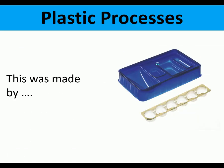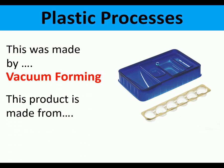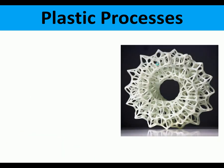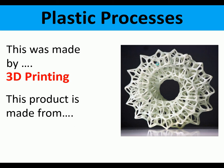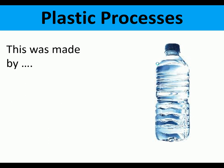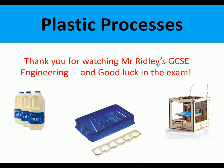This product was made by vacuum forming and is made from high impact polystyrene, HIPS. This product was made by 3D printing and is made from PLA. This product was made by blow moulding and is made from PET. Thank you for watching Mr Ridley's GCSE Engineering, and good luck in the exam.